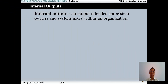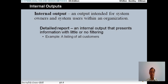Internal output is an output intended for system owners and system users within an organization. There are three kinds of reports. The first one is a detailed report — an internal report that presents information with little or no filtering. In this detailed report you have detailed information about the thing you want to describe. For example, a listing of all customers, with customer number, customer name, customer address, and customer telephone number.